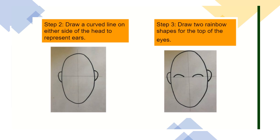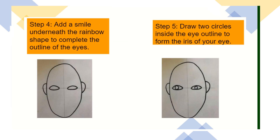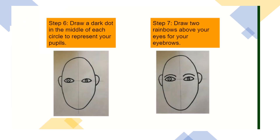Step 3: Draw two rainbow shapes for the top of your eyes, right in between the ears in the middle of your face. Step 4: Add a smile underneath each rainbow shape to complete the outline of your eyes. Step 5: Draw two circles inside each eye to form the iris — the coloured part of your eye. Step 6: Draw a dark dot in the middle of each circle to represent your pupils — the little black dots that we actually see out of.